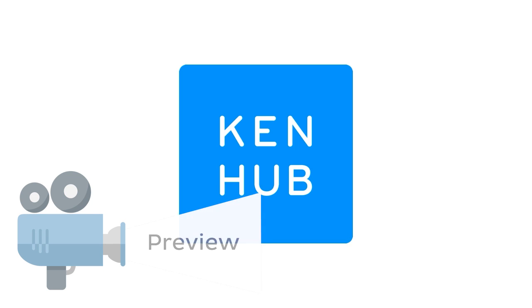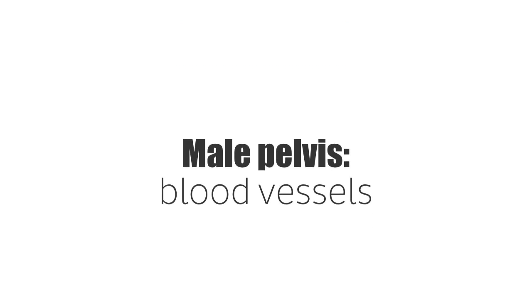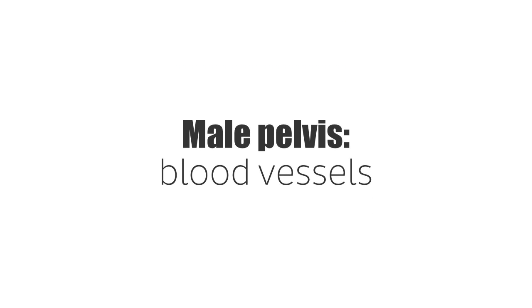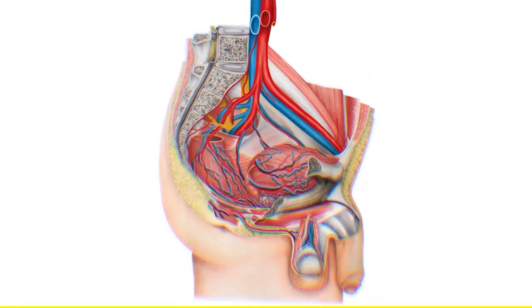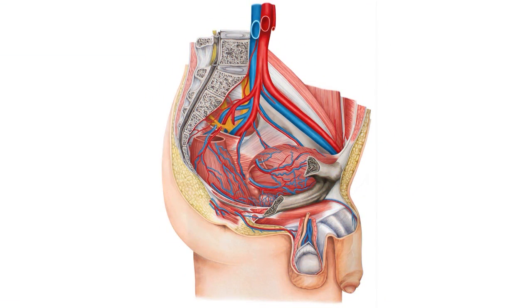Hello everyone, this is Juan from Kenhub and welcome to another anatomy tutorial where this time we're going to be discussing the blood vessels that we find on the male pelvis. To do so we're going to be exploring mainly this image that you see now on the screen, which is essentially a lateral view of the male pelvis.